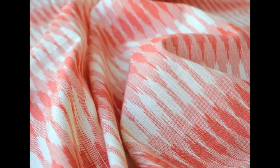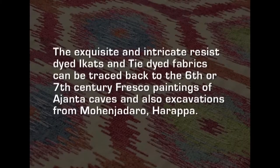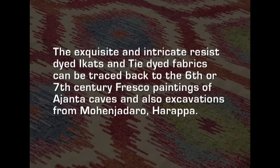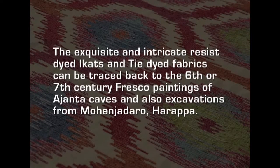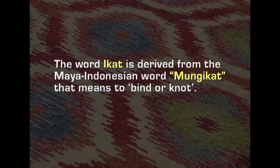The designs and the weave that are specific to these textiles differ from one region to another. The exquisite and intricate resist-dyed ikats and tie-dyed fabrics can be traced back to the 6th or 7th century fresco paintings of Ajanta caves and also excavations from Mohenjodaro and Harappa. The word ikat is derived from the Malay-Indonesian word mungikat, which means to bind or knot. This is a resist technique — the yarns are tied in a specific pattern as envisaged by the master weaver. Once tie dyeing is done, the yarns are taken to the loom and weaving takes place.